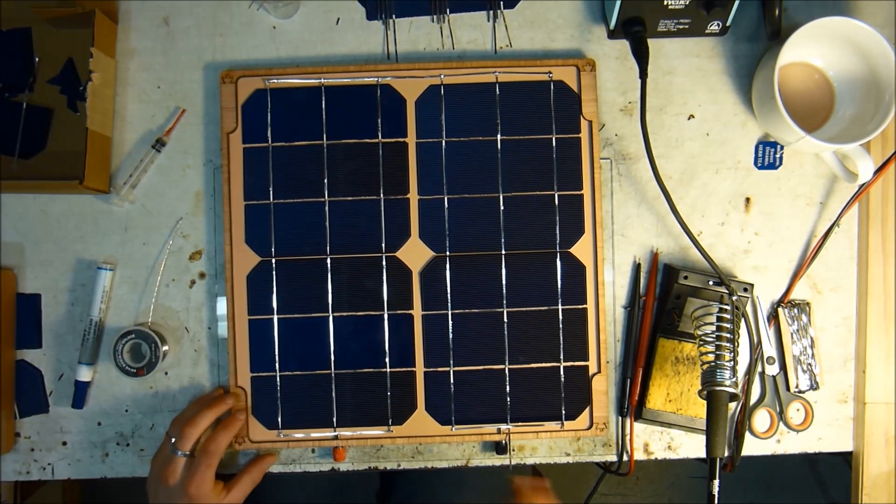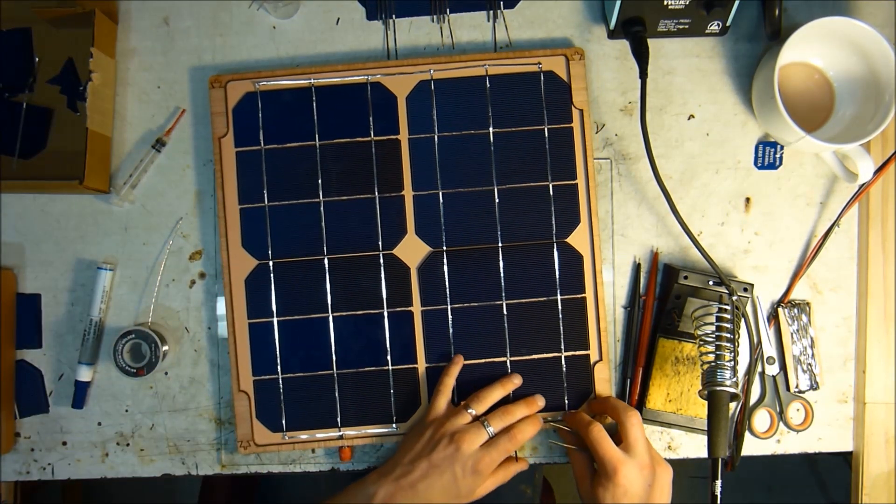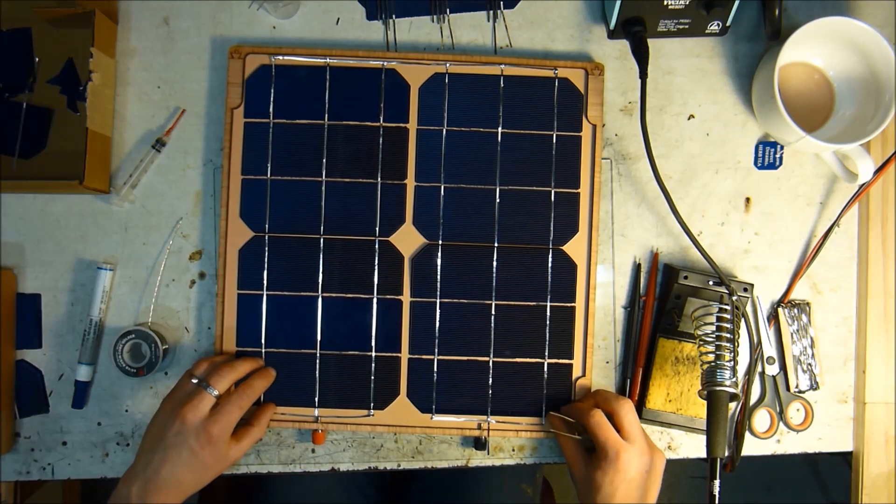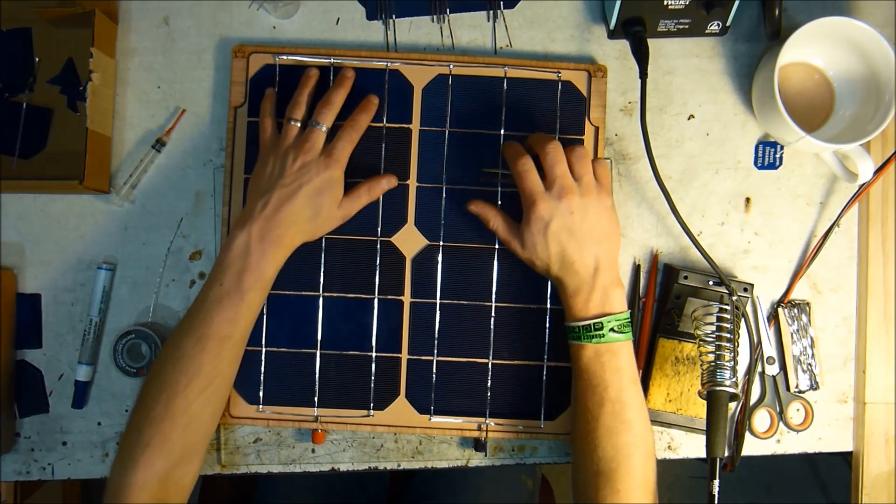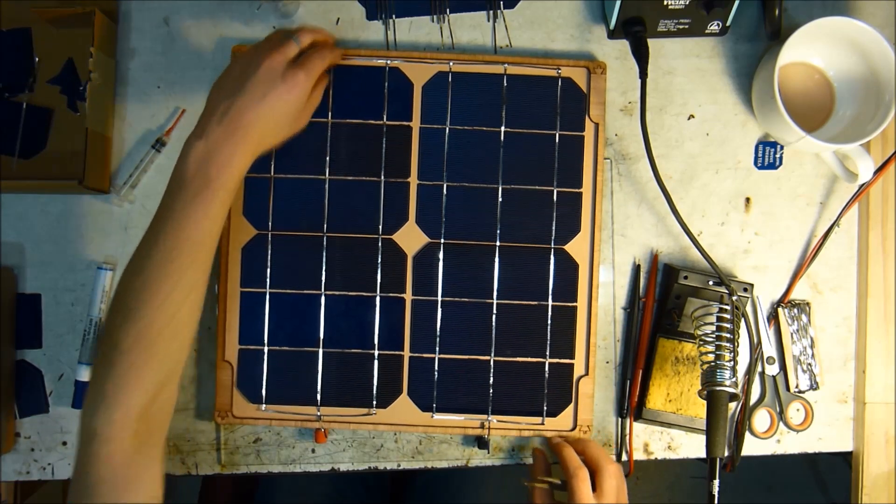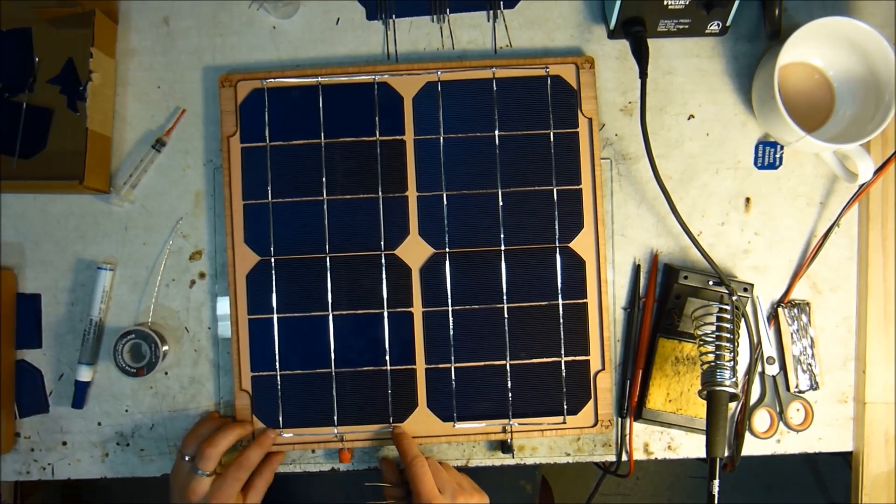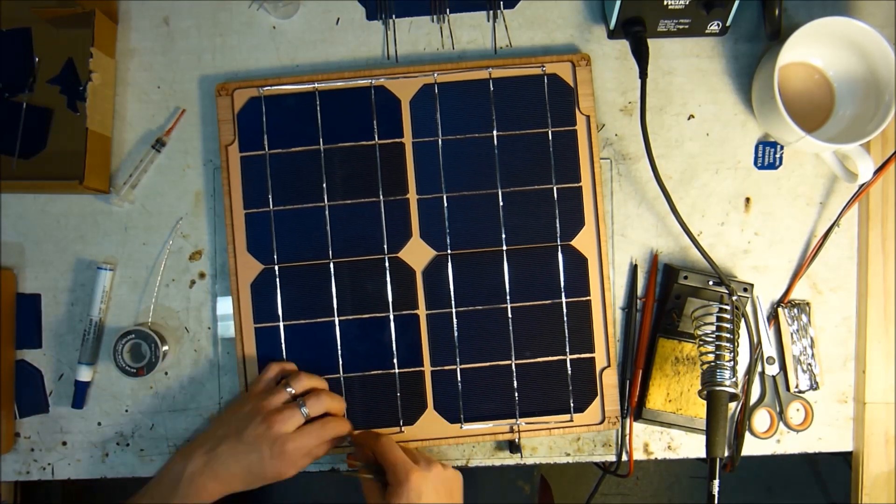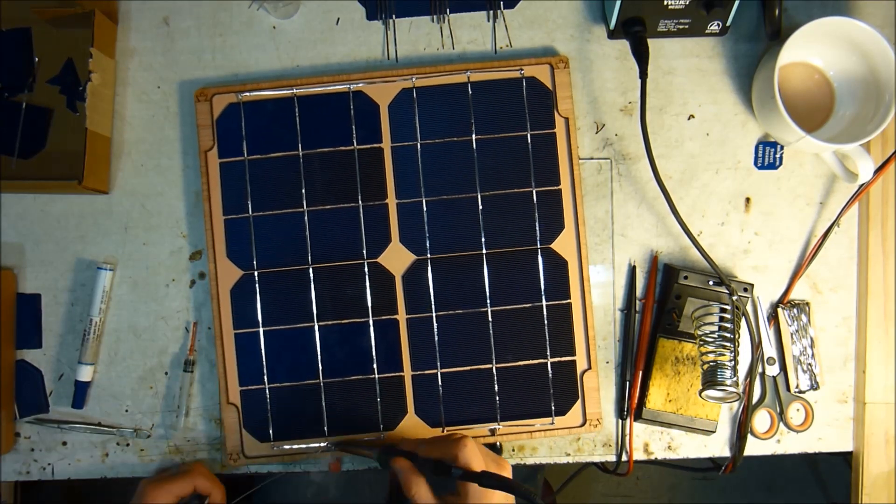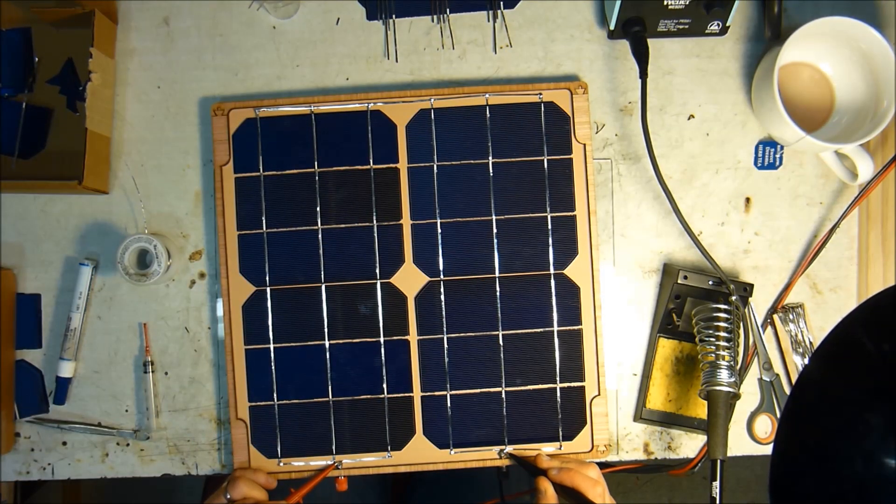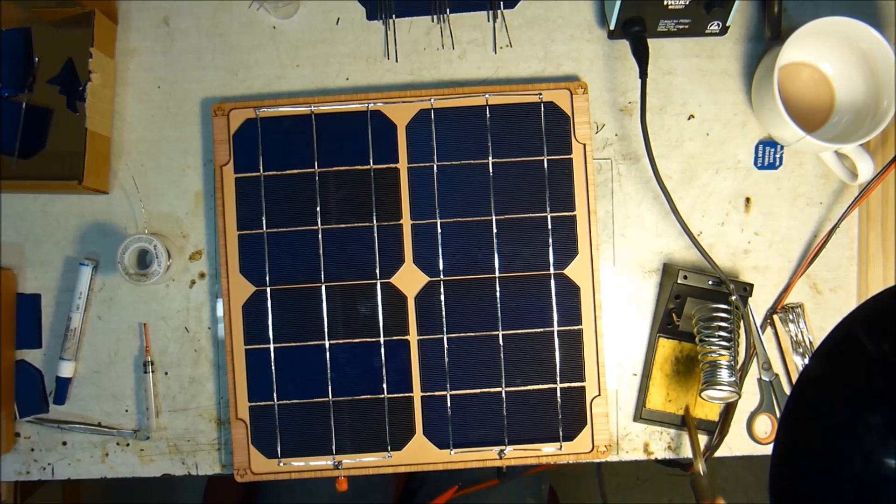Now what we need to do is connect these top buses to our terminals. So these are just banana plug jacks. And we have 5.3 volts. So that's good.